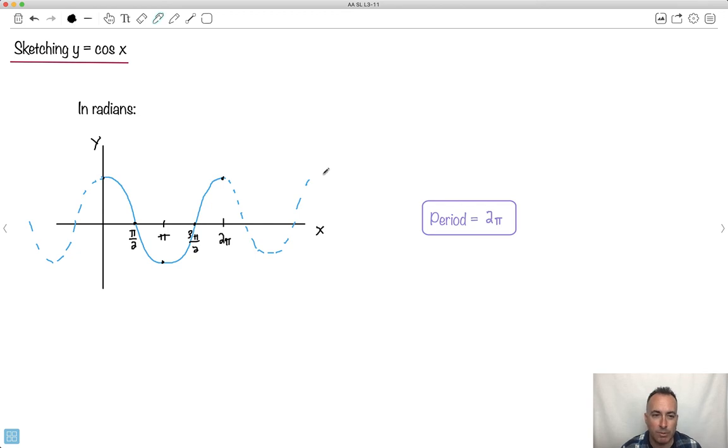Now why would we want to use this? Well, later on we have examples where we need to do transformations of these. That's true. But another thing, it's just useful to know the sketches of them because you can use them to get the values.